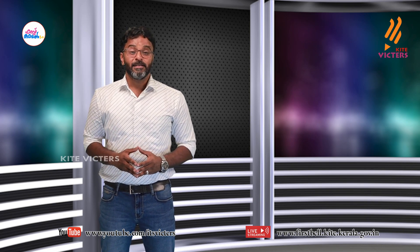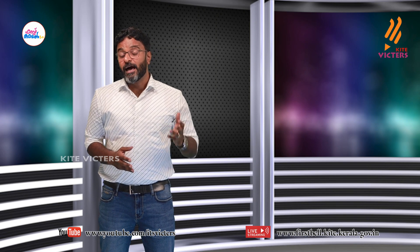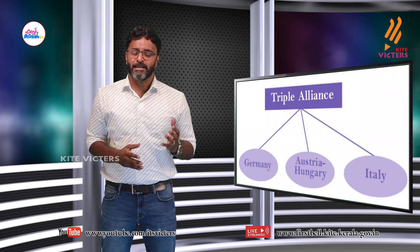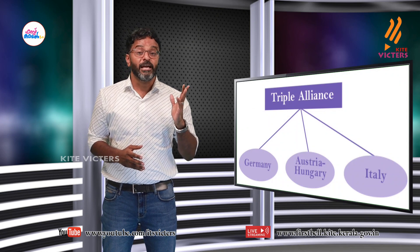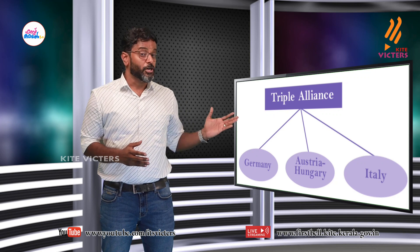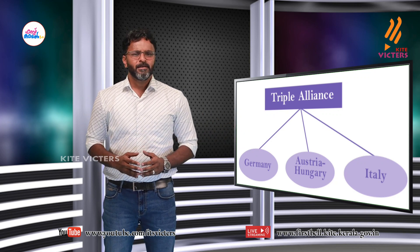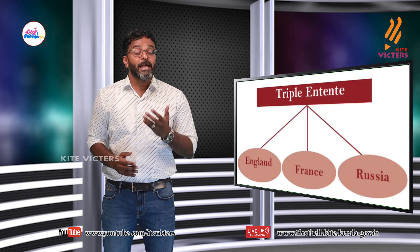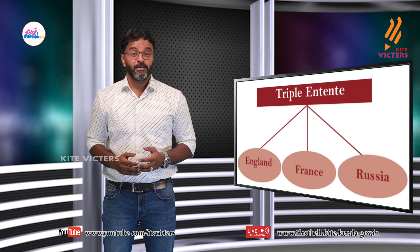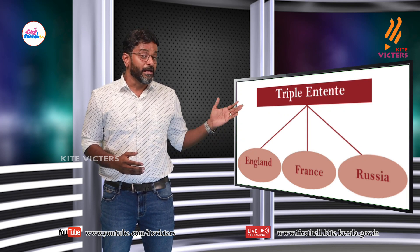During this period, there were mainly two military alliances. The first was the Triple Alliance, formed in 1882, with the leading countries being Germany, Italy and Austria-Hungary. The second was the Triple Entente, formed in 1907, with the leading countries being France, Russia and England.